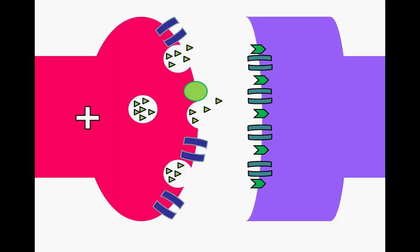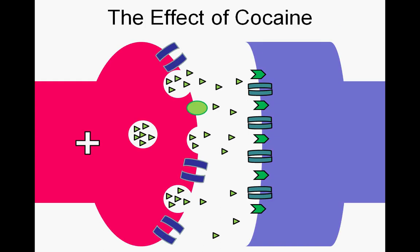The removal of neurotransmitters from the synapse is central to the understanding of the action of many psychoactive drugs. Cocaine specifically binds to dopamine reuptake pumps and blocks their ability to remove dopamine from the synaptic cleft. Dopamine levels remain high, binding the receptors on the postsynaptic neuron and triggering continuous nerve impulse stimulation.